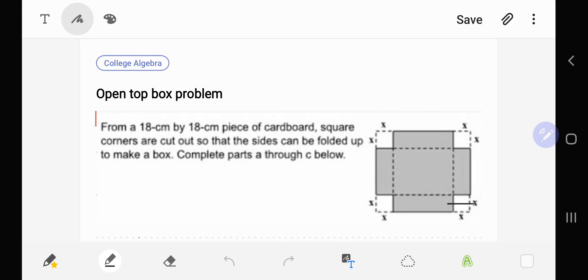We have a square piece of cardboard, 18 centimeters by 18 centimeters, from which we're going to cut square corners out, fold up the flaps, and create a box.